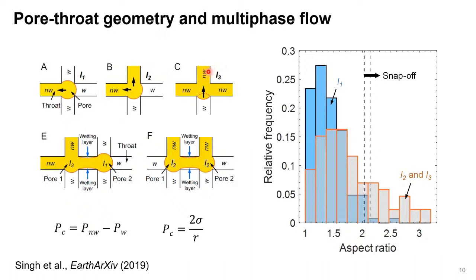Let's say it's an I3 configuration in one pore and I1 in another. When we keep injecting water, two things can happen: either a pore filling event where the pore gets emptied, or wetting layer expansion followed by snap-off, in which case the oil can be trapped in the pore.